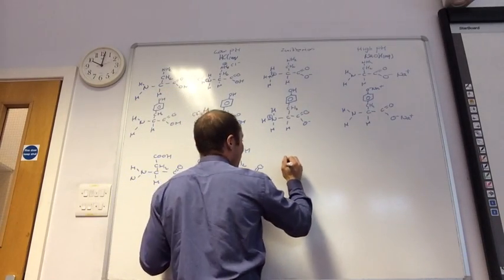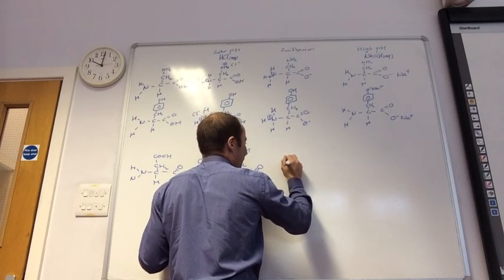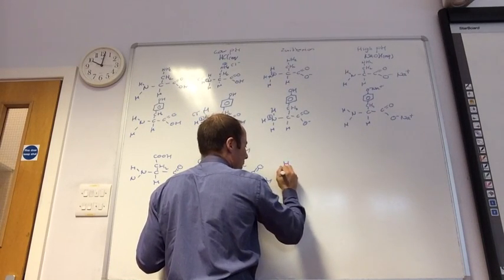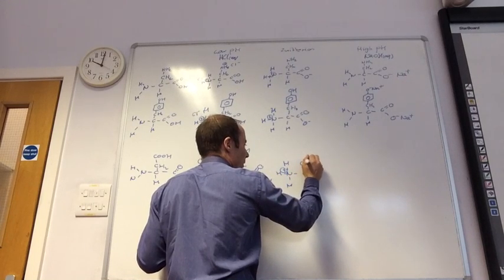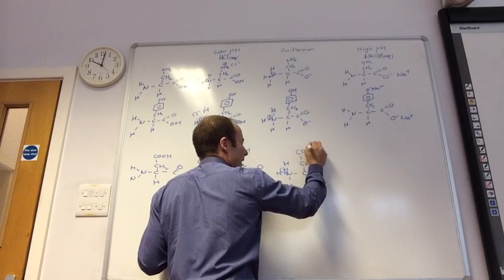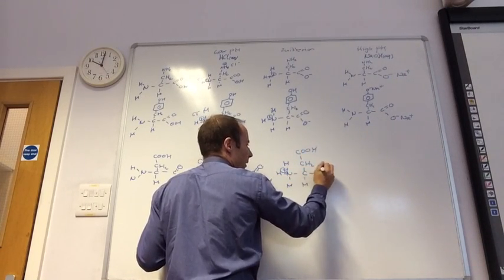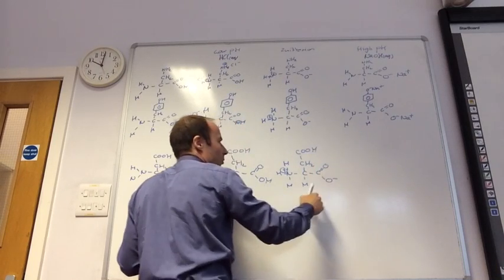So, for the next one, the zwitterion, again, ignore the side chain. The plus goes on your nitrogen. Your side chain carboxylic acid remains the same to give you your internal salt.